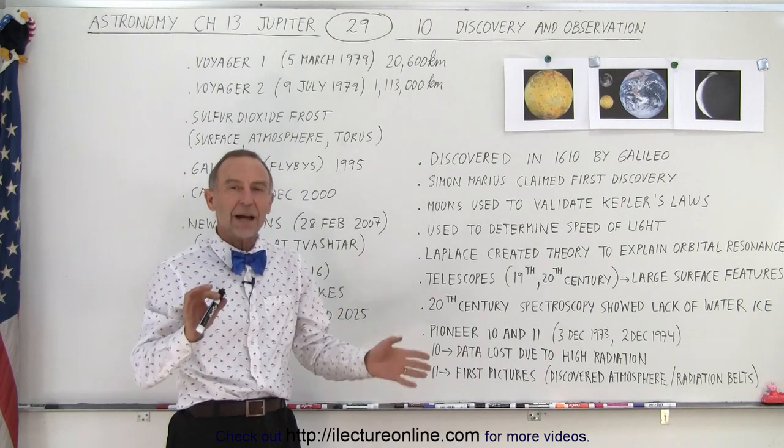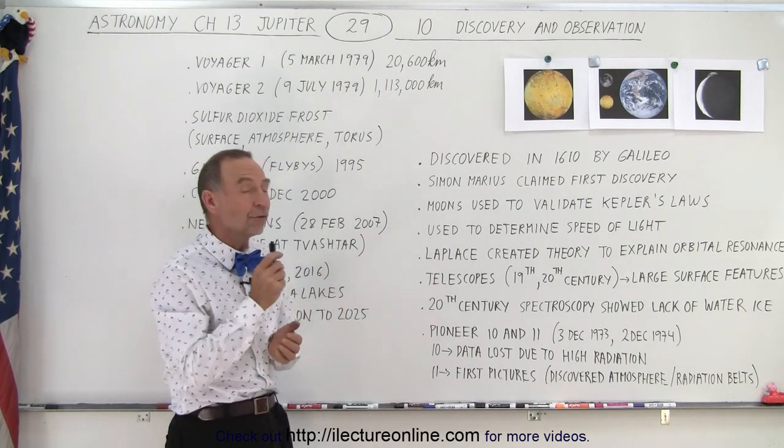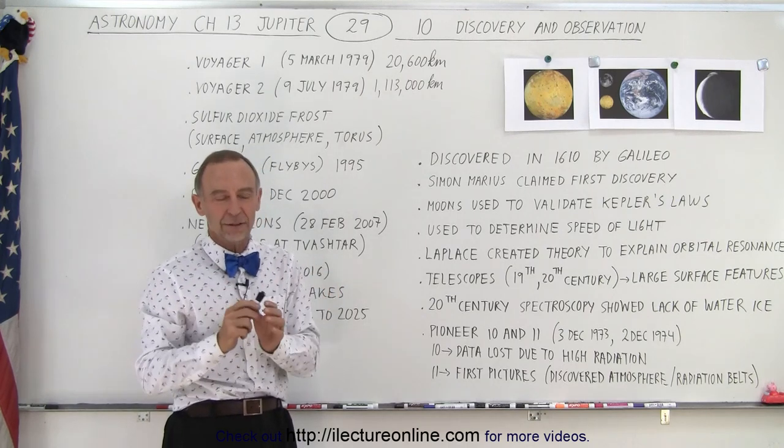They used the information over time as they were observing the moons to validate Kepler's laws. They also tried to use it to find the speed of light.